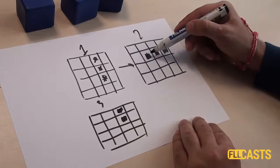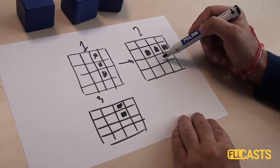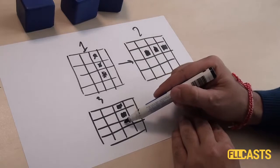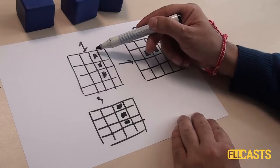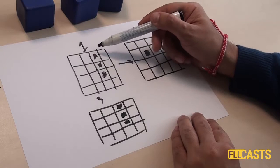This cell will be reborn because it has 1, 2, 3 neighbors. And this cell here will also be reborn. And we've arrived at the previous generation.